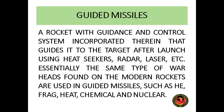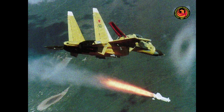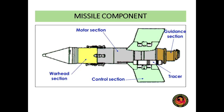We also have guided missiles — rockets with a guidance and control system incorporated therein that guides it to the target after being launched. It uses heat seekers, radar, or laser to detect and track targets. Essentially the same type of warheads found on modern rockets are used in guided missiles: high explosives, fragmentation, HEAT, chemical, and nuclear. The missile has a warhead section, motor section, fin control section, tracer, and guidance section.